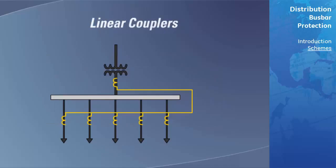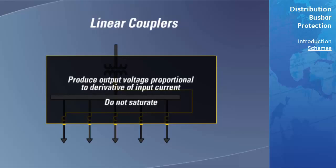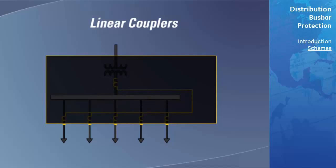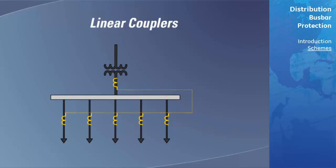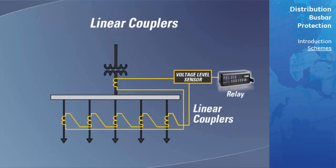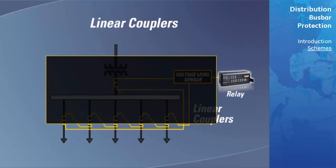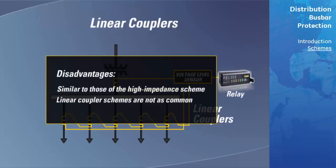A linear coupler, or air-core mutual reactor, produces an output voltage proportional to the derivative of the input current. Because they are using air cores, linear couplers do not saturate. During internal faults, the sum of the bus bar currents, and thus their derivatives, is zero. Based on this, a simple bus bar protection scheme is achieved by connecting the secondary windings of the linear couplers in series, in order to respond to the sum of the primary currents, and connecting a simple voltage sensor to either end. The disadvantages of this approach are similar to those of the high impedance scheme, in addition to the fact that linear coupler schemes are not as common.